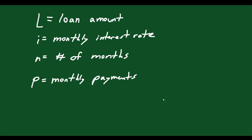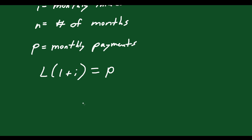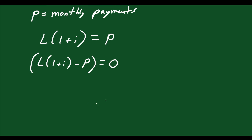With all this in mind, I want to think about what would happen if I was only making one payment. If I was only making one payment, then if you took the loan and multiplied it by 1 plus i, that would equal the payment right after one month — the loan amount plus the interest over one month. You can rewrite this as L times (1 plus i) minus P equals 0. That's for one payment.